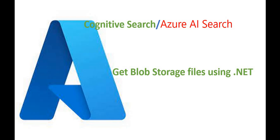Hello everyone, welcome back to the .NET Office. In this video we are going to see how we can get all the blob storage files in our .NET application. In the previous video, we created the storage account and then the container, uploaded a couple of files, and then created a Cognitive Search using AI services. We set up indexes and integrated that Cognitive Search with the blob storage — all done in the Azure portal.